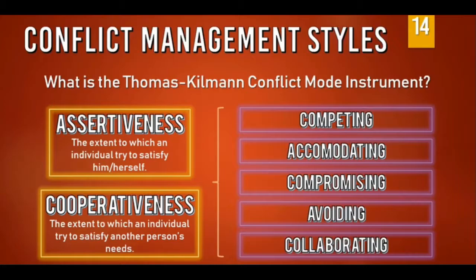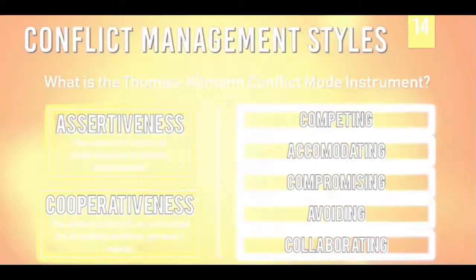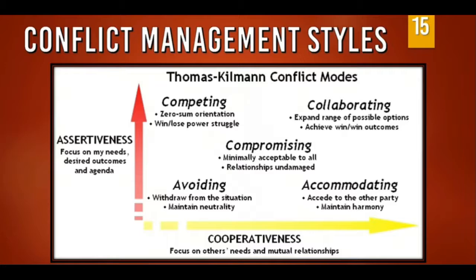Looking at the chart, Assertiveness is on the Y-axis and Cooperativeness on the X-axis. Avoiding has the lowest assertiveness and cooperativeness, whilst collaborating has the highest of both. Competing has high assertiveness but low cooperativeness — the complete opposite of accommodating, which has high cooperativeness and low assertiveness. And lastly, compromising has an equal amount of both determinants.